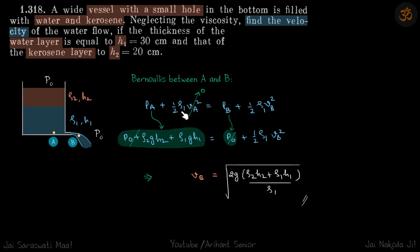At point B, p_b equals p0, and we have half rho_1 v_b squared. The only unknown is v_b — solve for that and this will be our answer.